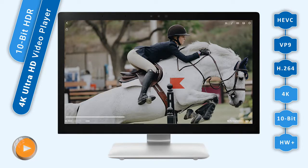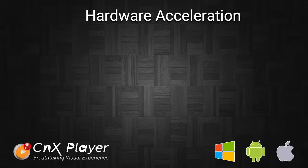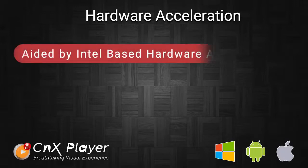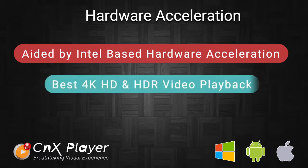CNX Media Player's core framework has a remarkably highly optimized implementation of hardware video decoders with the best usage of available resources. This hardware acceleration contributes significantly to the performance and smooth playback of high-resolution 4K Ultra HD content.